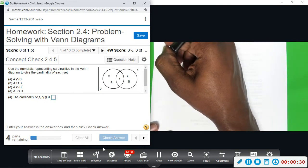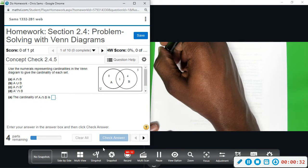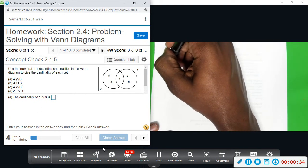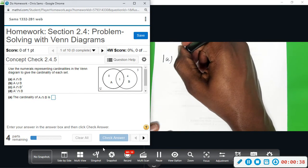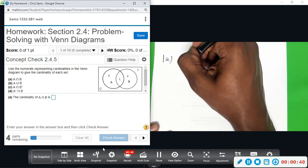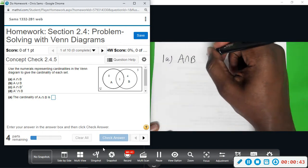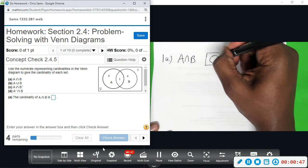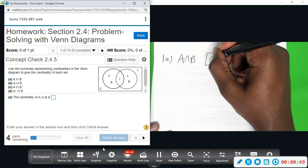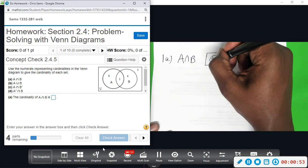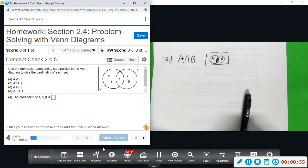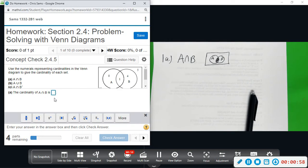Number one, part A: we want to know the number of elements in A intersect B. In the Venn diagram, that would represent the part of A and B that are overlapping. So this middle piece here, and from the image we can see that there is one element in there. So for part A, we get one.